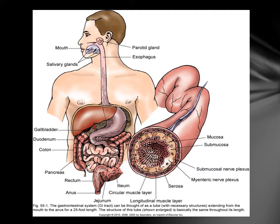Digestion is the mechanical and chemical process in which complex foodstuffs are broken down into simpler forms that can be used by the body. Absorption is carried out as nutrients are taken up by the circulatory system.